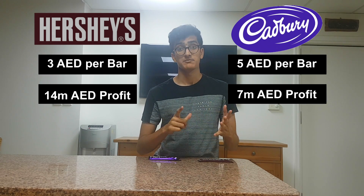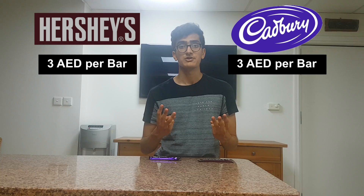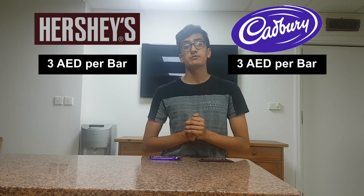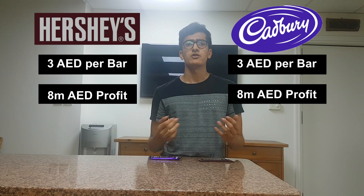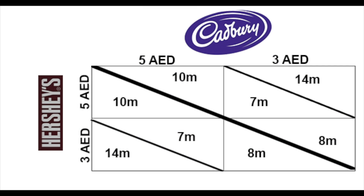It's also likely that Cadbury would realize this and therefore would also lower their price to three dirham. At this price point, both producers only make a profit of eight million — meaning they're worse off than when they were both at five dirham per chocolate bar. If we create a payoff square of the two chocolate companies, we can see once again that their self-interest in making more profits actually leads to self-harm. In order to increase profits they both lower their prices, but by doing so they both decrease their profits instead. What companies should be doing is collaborating to set prices at a higher price point where they can both earn a high level of profit.